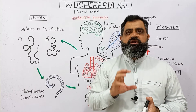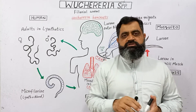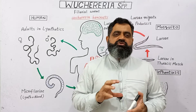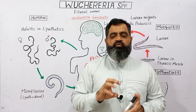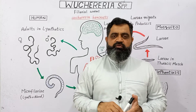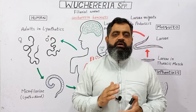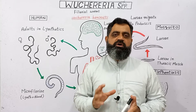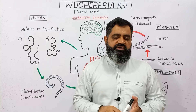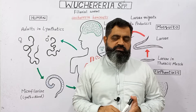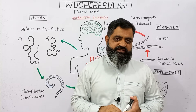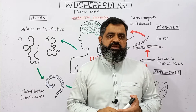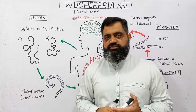Tropical countries are usually very hot countries with a lot of rain. These parasites are very common there, and almost every year 250,000 people are infected by these types of parasites. Let's discuss this life cycle in detail.